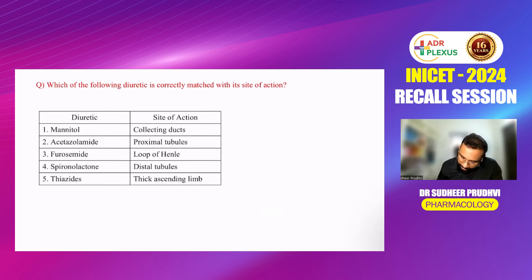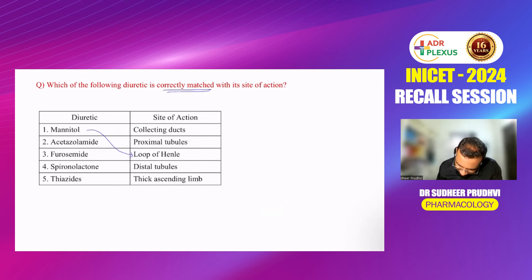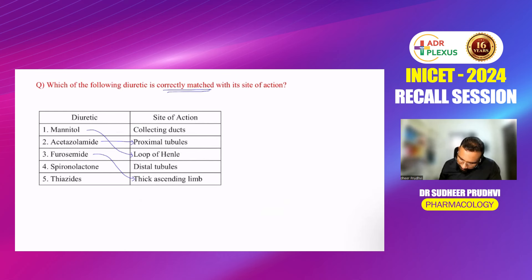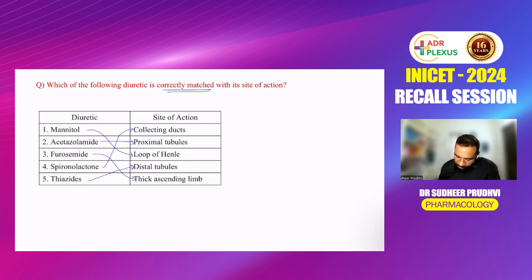Next easy question: which diuretic is correctly matched with its site of action? Mannitol acts on the loop of Henle. Acetazolamide acts on the proximal tubules. Furosemide acts on the thick ascending limb. Spironolactone (potassium-sparing diuretic) acts at the collecting ducts. Thiazides act at the distal tubules.